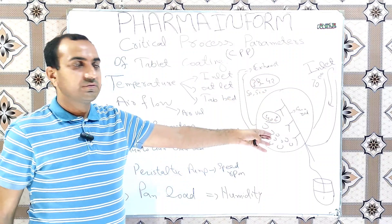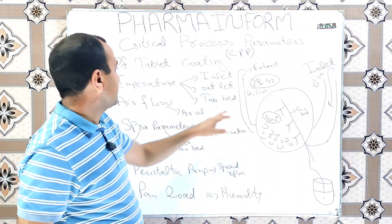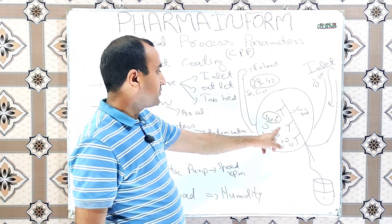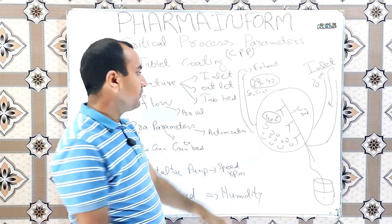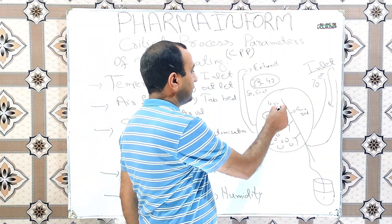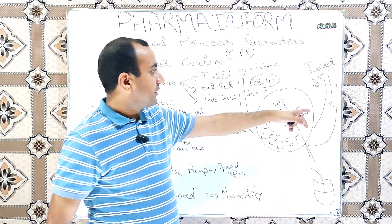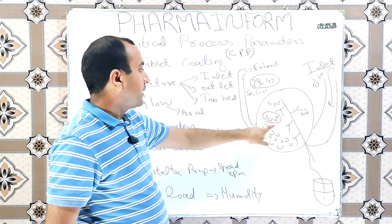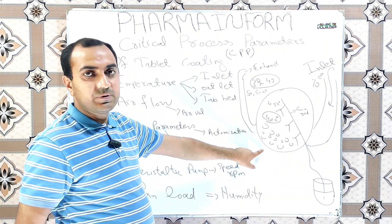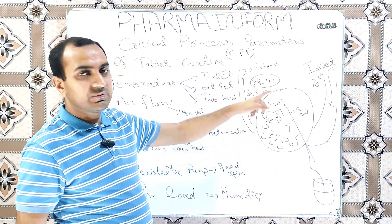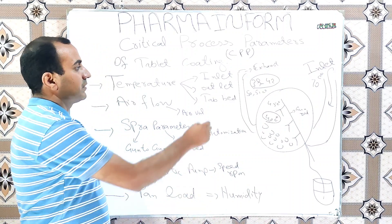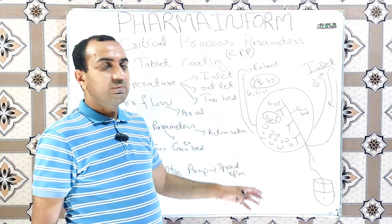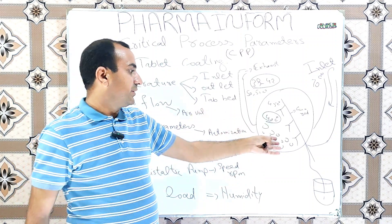These are the synchronizations of temperatures. If our tablet bed temperature goes above 45 degrees centigrade, we will decrease our inlet temperature. When we decrease our inlet temperature, our tablet bed temperature will decrease and our outlet temperature will also decrease. This is the importance of all three temperatures.